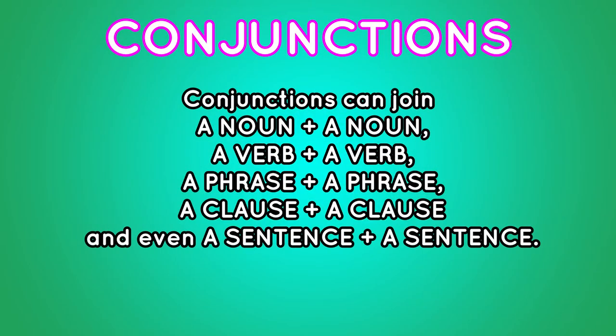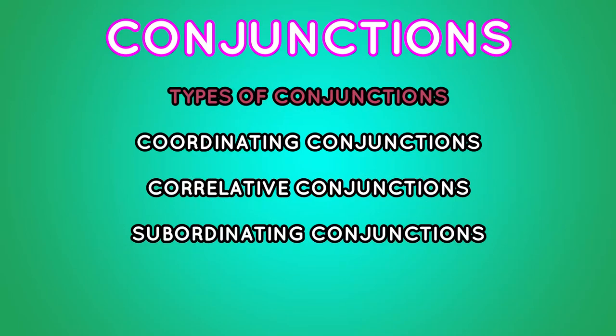Now let's see almost the last part of speech: conjunctions. A conjunction is a word that joins words or groups of words that have the same grammatical weight in a sentence. This means that conjunctions can join a noun with a noun, a verb with a verb, a phrase with a phrase, a clause with a clause, and even a sentence with a sentence. We have three different types of conjunctions: coordinating conjunctions, correlative conjunctions, and subordinating conjunctions.